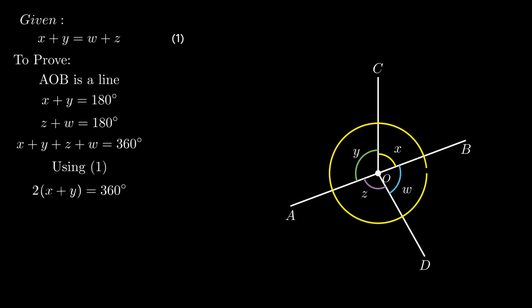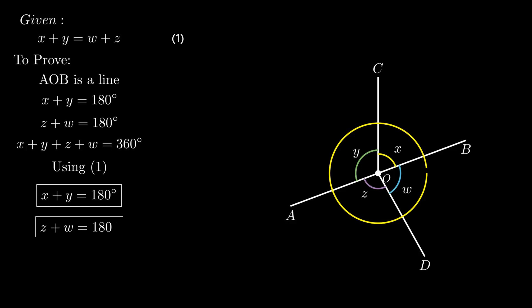On simplifying, we get twice of the sum of angle x and y equals 360 degrees. On further simplification, the sum of x and y becomes 180 degrees. As the sum of angle x and y equals the sum of w and z, this result can also be proved as the sum of w and z equals 180 degrees.